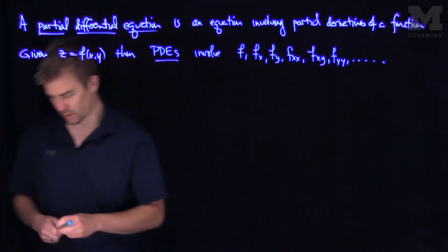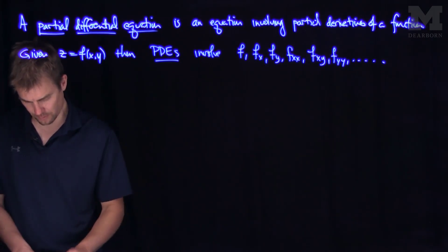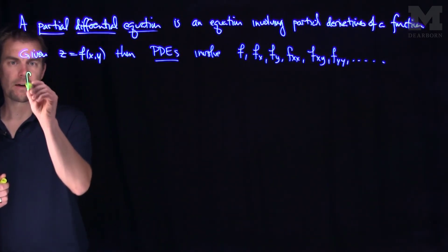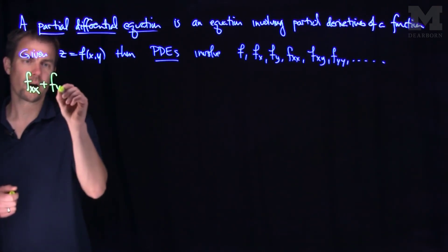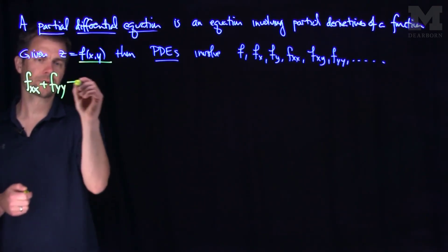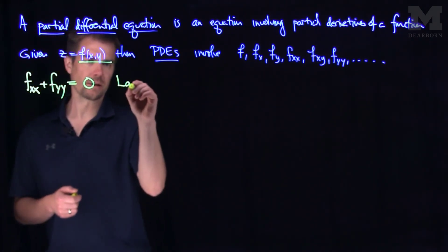I'll write down some classical ones. The equation f-x-x, the second x-derivative, plus the second y-derivative of a function of two variables, being equal to zero, is the Laplace equation.